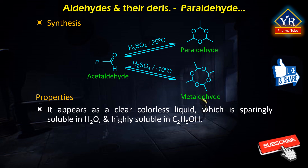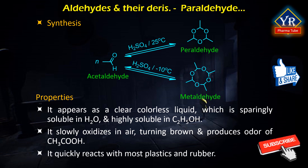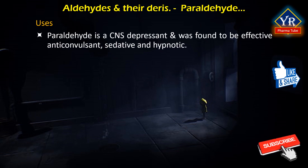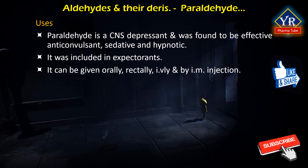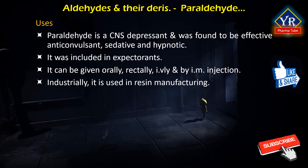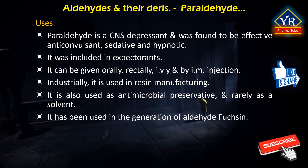Paraldehyde appears as a clear colorless liquid which is sparingly soluble in water and highly soluble in ethanol. It slowly oxidizes in air, turning brown and producing an odor of acetic acid. It is less dense than water and vapors are heavier than air. It quickly reacts with most plastics and rubber. Paraldehyde is a CNS depressant and was found to be an effective anticonvulsant, sedative, and hypnotic. It was included in some cough medicines as an expectorant and has been given orally, rectally, intravenously, and by intramuscular injection. Industrially, paraldehyde is used in resin manufacture as an alternative to formaldehyde when making phenol-formaldehyde resins, and has also found use as an antimicrobial preservative and rarely as a solvent. It has been used in the generation of aldehyde fuchsin.